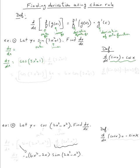Times the derivative with respect to x of g prime — so times the derivative of g, which is g prime — of three x squared plus one. So there's a multiplication here.